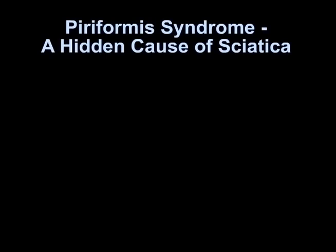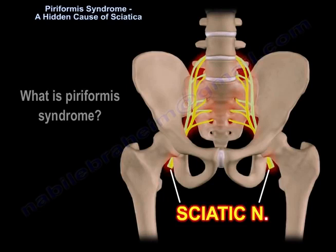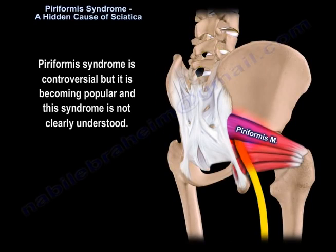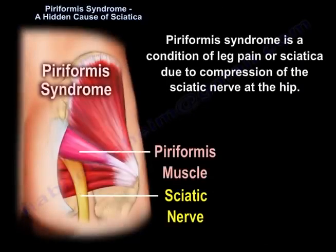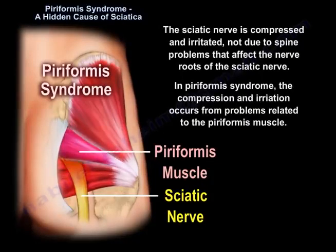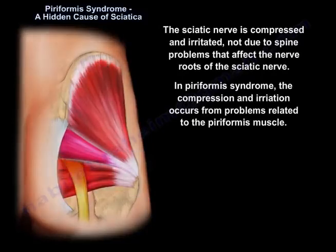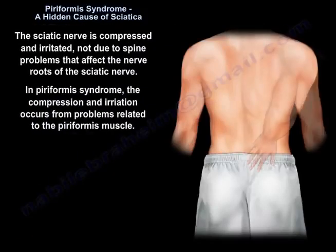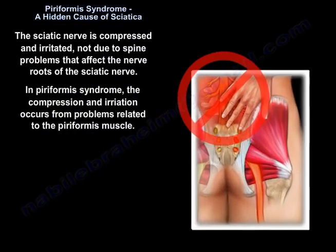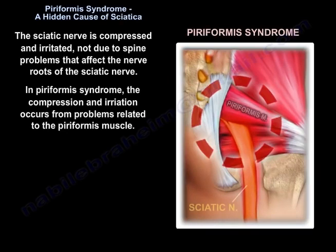Piriformis syndrome — a hidden cause of sciatica. Piriformis syndrome is controversial but it's becoming popular, and this syndrome is not clearly understood. It is a condition of leg pain or sciatica due to compression of the sciatic nerve at the hip. The sciatic nerve is compressed and irritated, not due to spine problems that affect the nerve roots of the sciatic nerve. In piriformis syndrome, the compression and irritation occurs from problems related to the piriformis muscle.